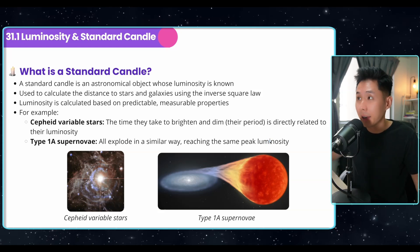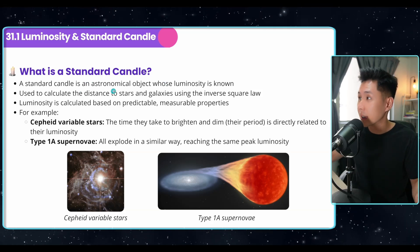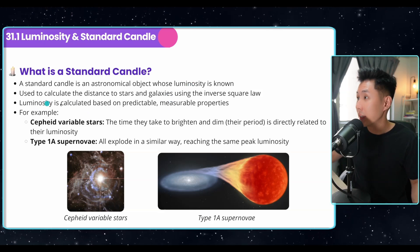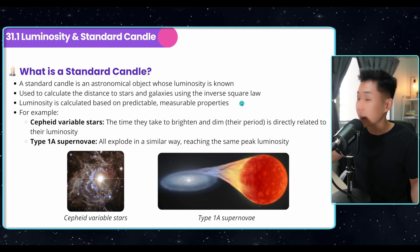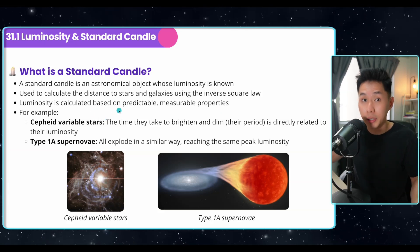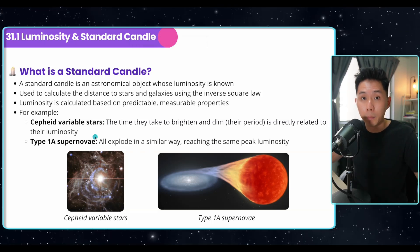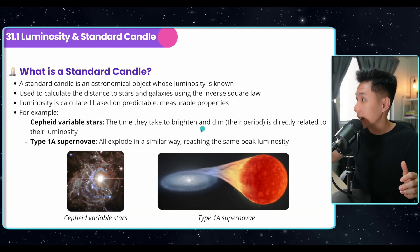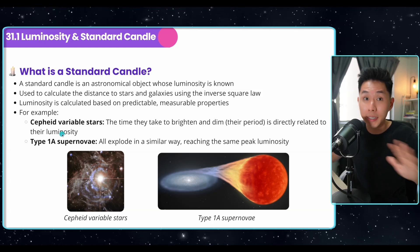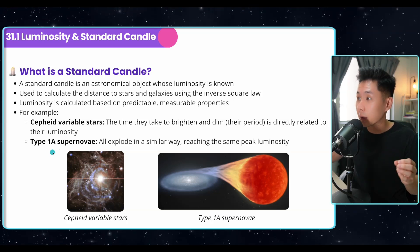Before we talk about how to calculate all that, something you have to know is that scientists use a standard candle. A standard candle is an astronomical object whose luminosity is known. They are used to calculate distance to stars and galaxies using the inverse square law. Luminosity is calculated based on predictable, measurable properties. Two examples are Cepheid variable stars — the time they take to brighten and dim is directly related to their luminosity — and Type Ia supernova.